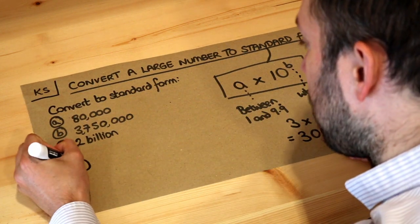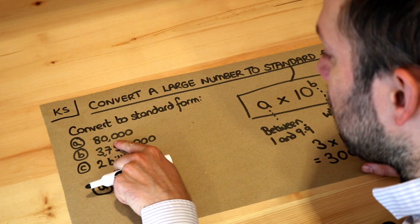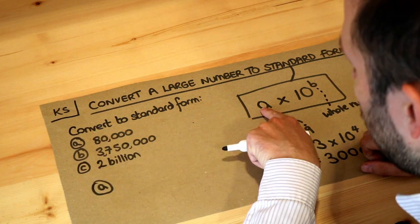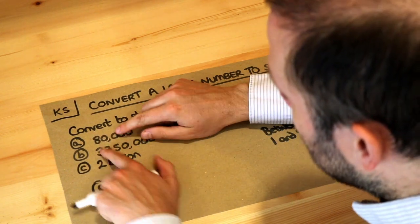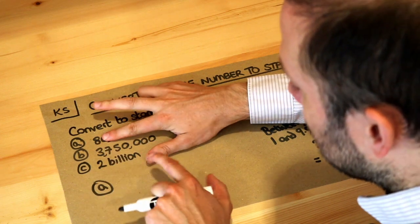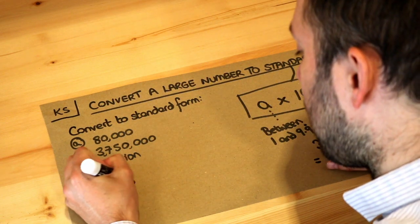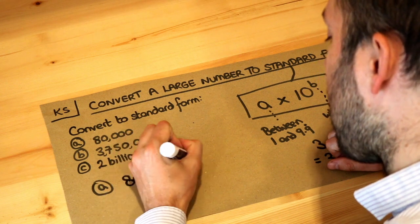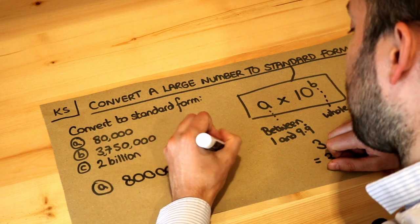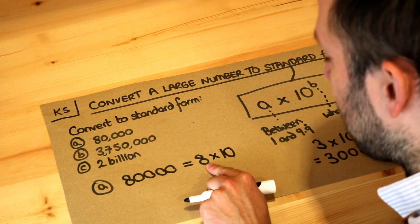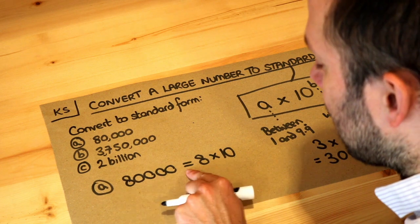So let's do each of these numbers. We've got 80,000. What would be the number that's between 1 and 10 on the front? Well, we can see that it's going to be the 8 if we ignore those zeros on the end, so it's going to be 8. Then let's think about how many times do we have to times 8 by 10 until we get to 80,000.